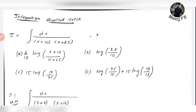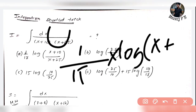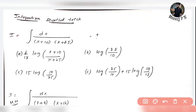Without any further delay, let's start. Look at the first question: integration of dx divided by (x plus 10) into (x plus 25). The key observation is: look at the numerator — it is 1. In the denominator, observe that x plus 10 and x plus 25 share the same structure. Within a second you can get the answer.